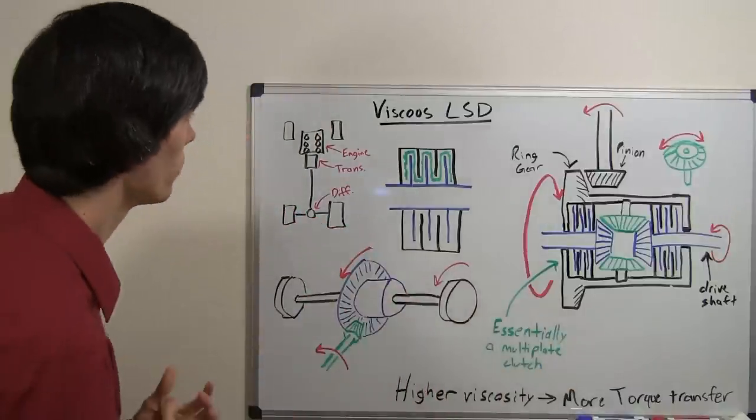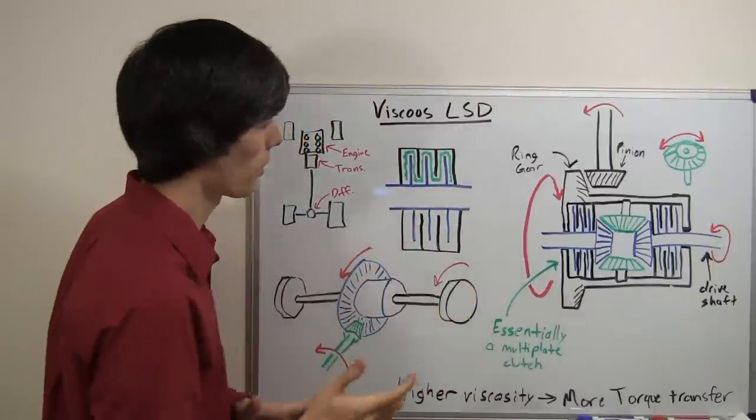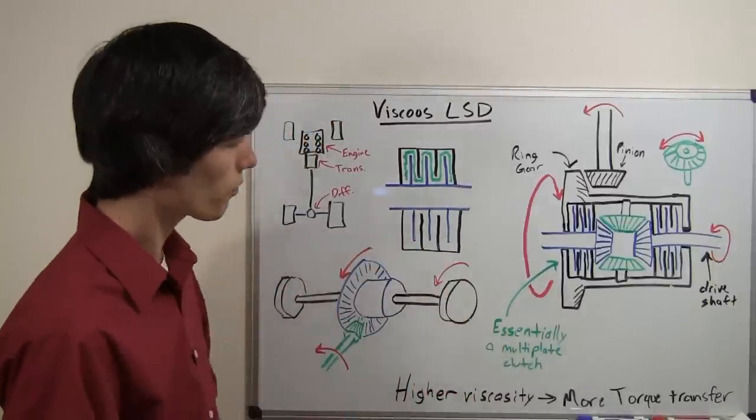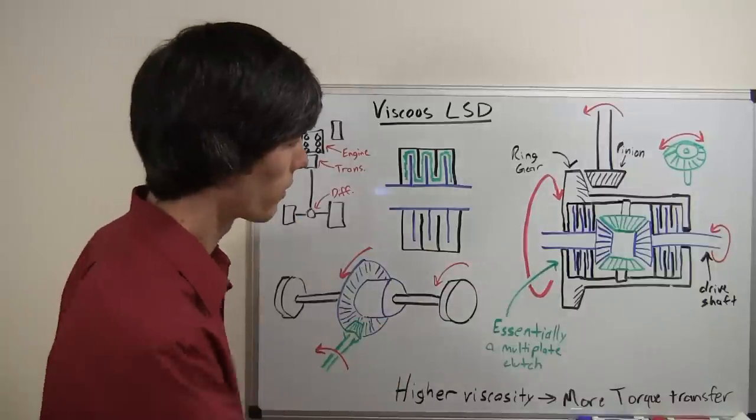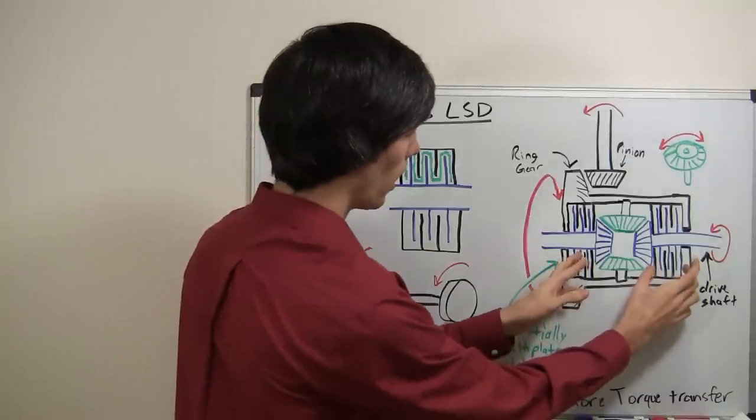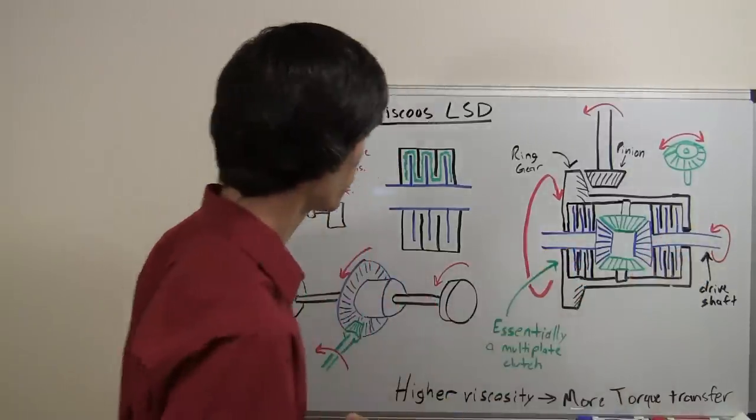Now how it achieves this is by using a viscous coupling within the differential. So basically if you're looking inside of the differential, what you've got going on is these two viscous couplings, one for each drive shaft.